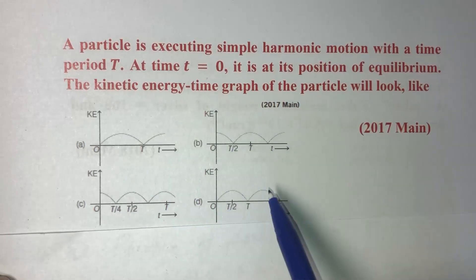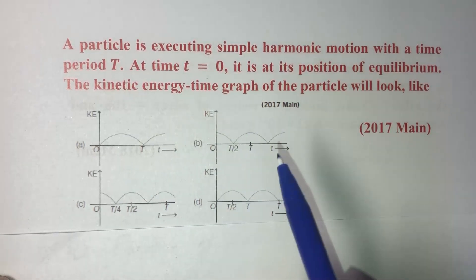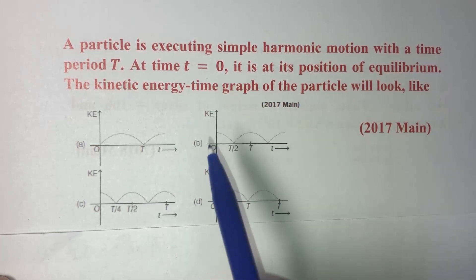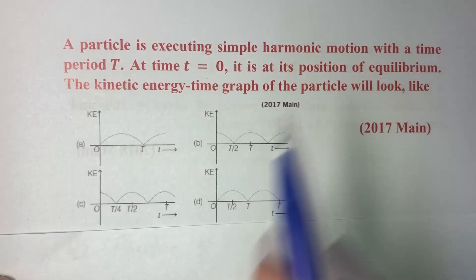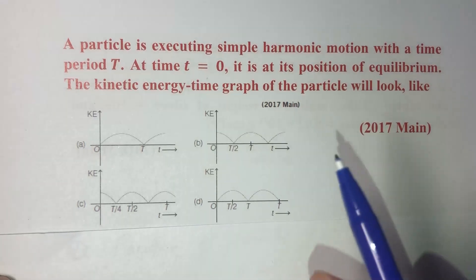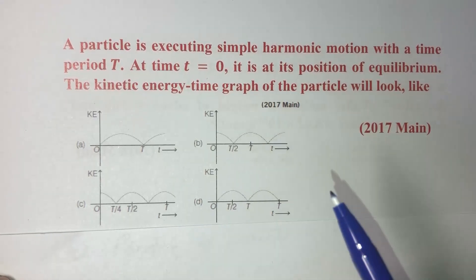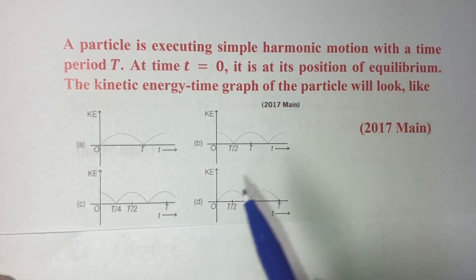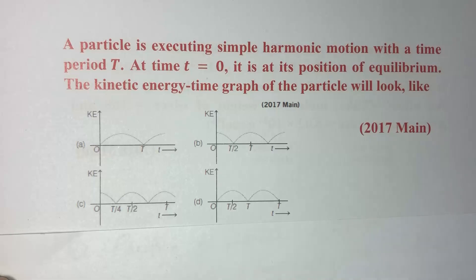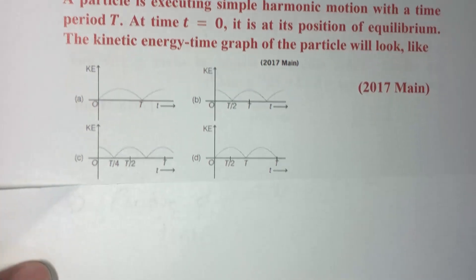We know the equation for displacement x, and from that we are going to differentiate it to find out the velocity. Then we are going to use the formula for kinetic energy and try to find out what will be the velocity of that particle at that moment. So let us start by using the displacement equation.